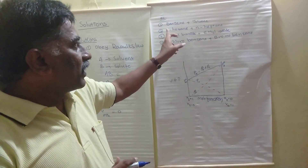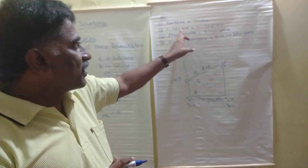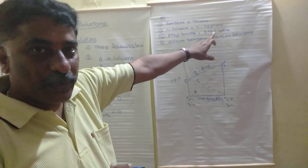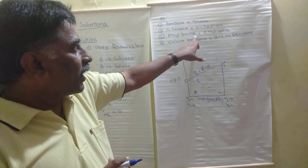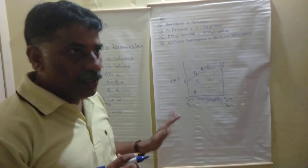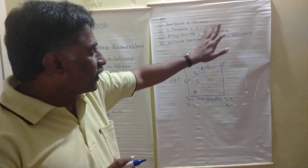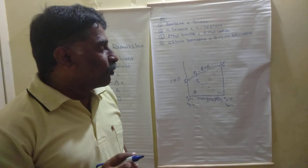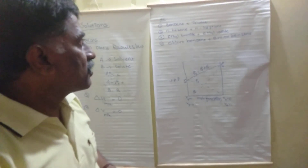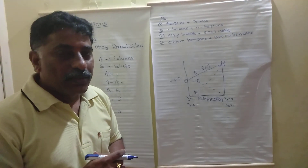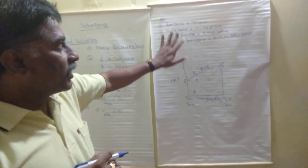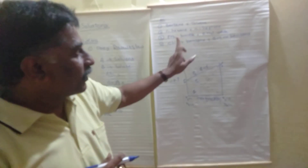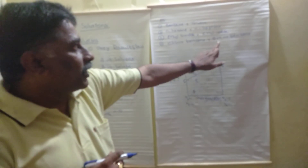Other examples of ideal solutions include: n-hexane and n-heptane, ethyl bromide and ethyl iodide, and chlorobenzene and bromobenzene. These are the examples of ideal solutions.